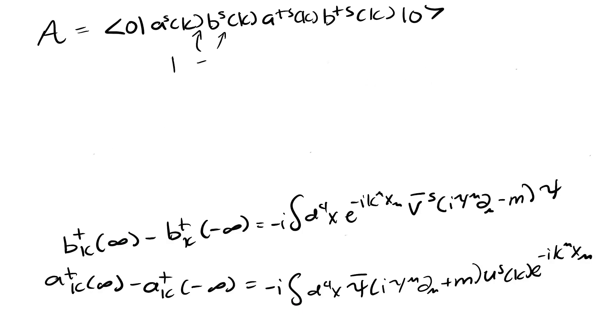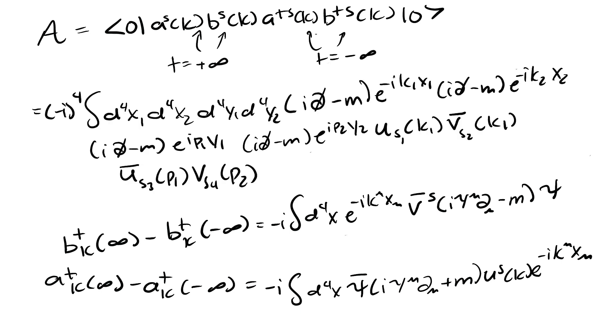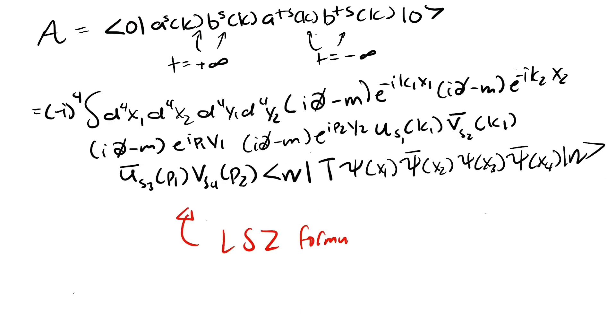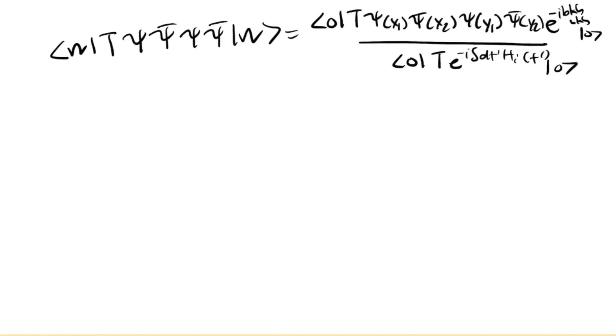Like before, to calculate the matrix elements, we have to calculate the VEV of the correlation function. Again, we can use the Gelman-Low theorem to relate this to the interacting Hamiltonian.